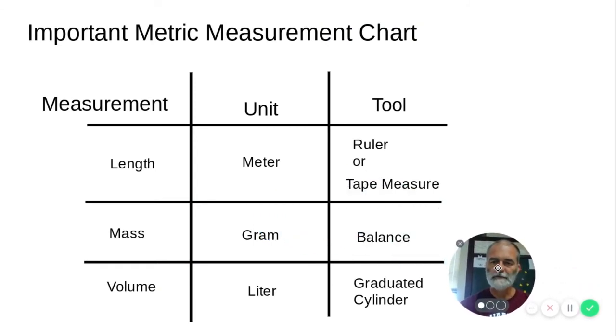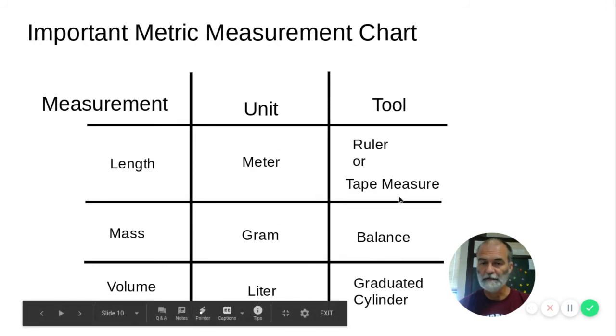So common measurements, units, and tools. Length. The unit is usually a meter, but it could be a centimeter or a millimeter or kilometer. Use a ruler or a tape measure. Mass, grams or kilograms, maybe milligrams if you're talking about medicine. And we use a balance. In some cases, an electric balance or a triple beam balance. Volume, we measure in liters. Could use milliliters. We could even use centiliters or kiloliters, but those aren't used very much. And we use something called a graduated cylinder. These are important things to know and important things to understand. The difference between the measurements, mass, volume, and length. The units, meters, liters, and grams. And the tools that we use to measure them.